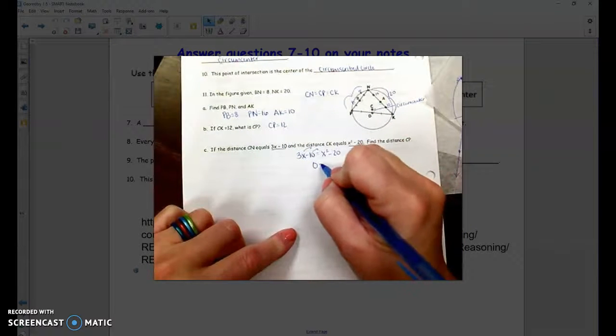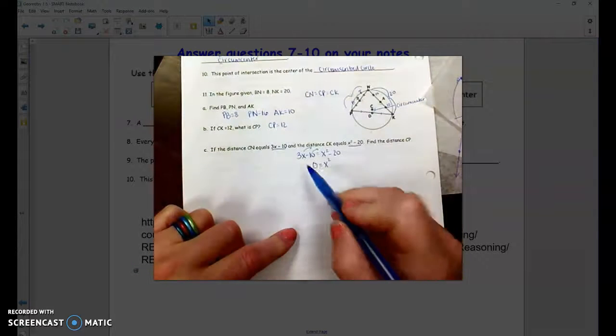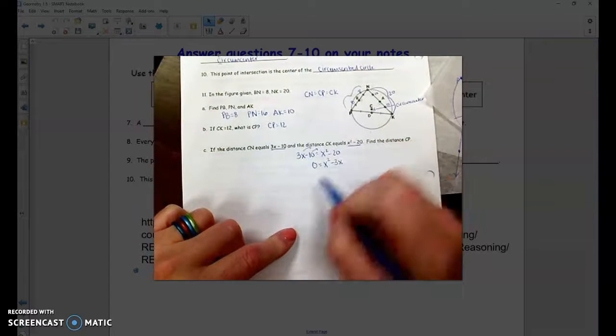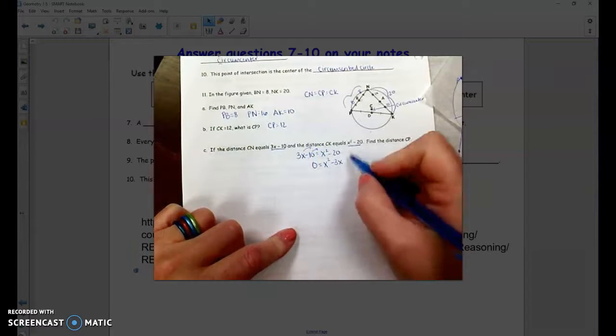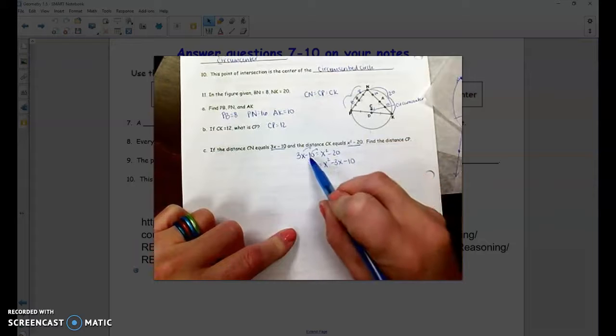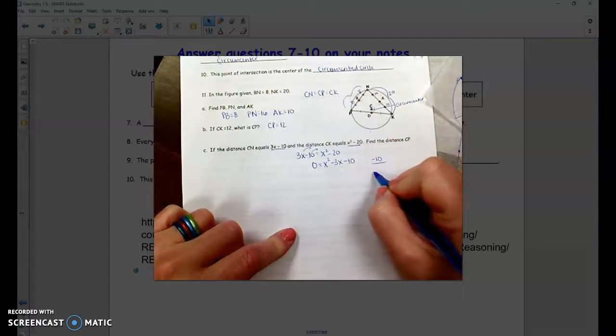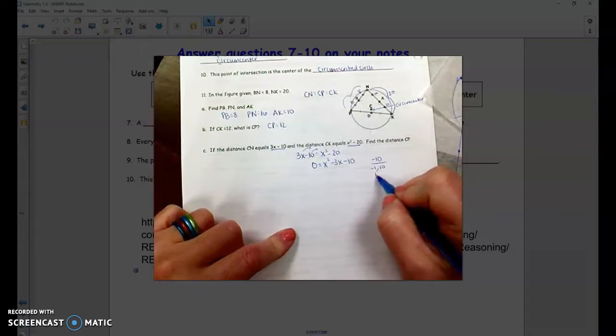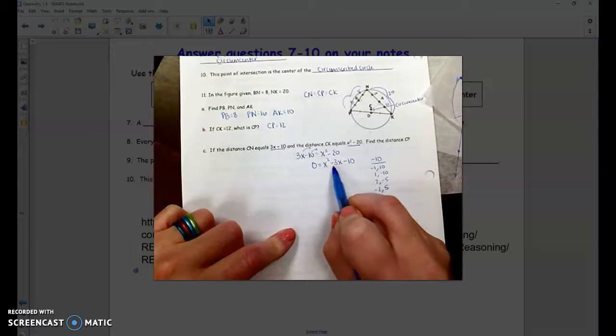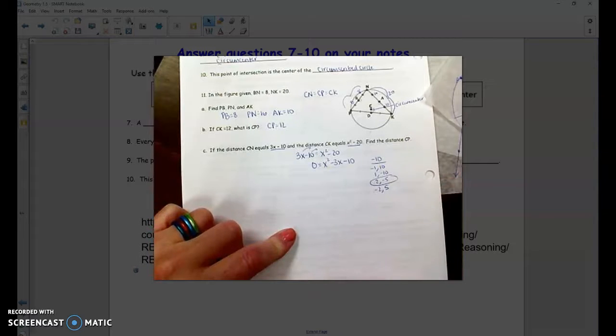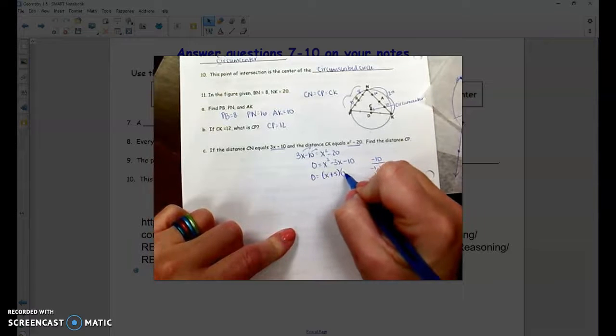So the 3X and the negative 10 are what are going to move, and don't forget to change their signs. So we're setting this equal to 0, we're maintaining the positivity of X squared, 3X comes over and becomes negative 3X, the negative 10 comes over and becomes positive 10, and it can combine with the negative 20 to make negative 10. Negative 20 plus 10 is negative 10. So we need factors of negative 10. Remember, that means your signs have to be opposites. And we're looking for which pair adds to get a negative 3, and that's the positive 2 and negative 5.